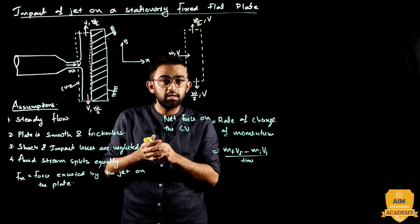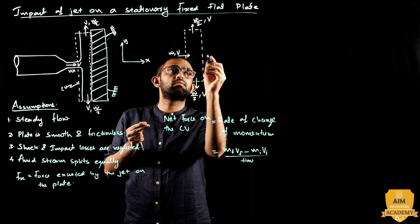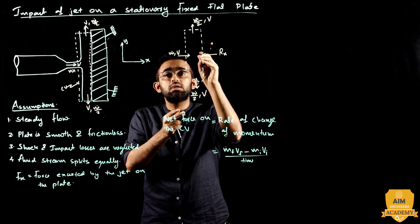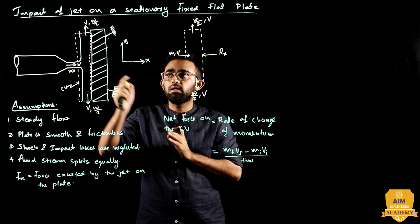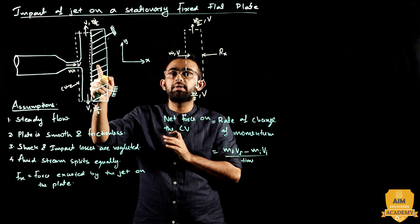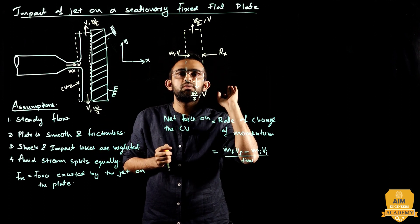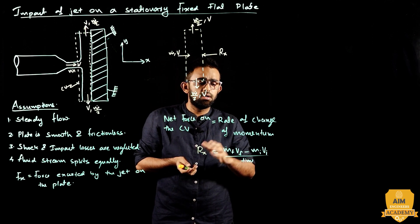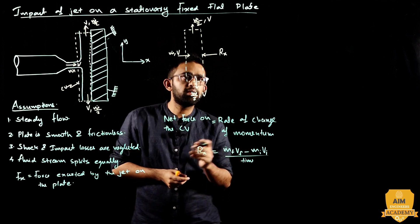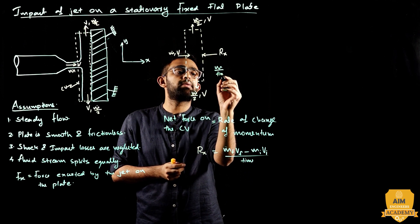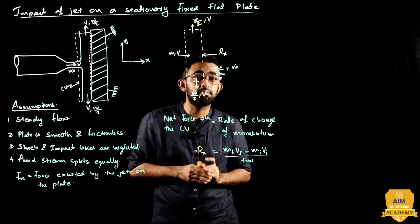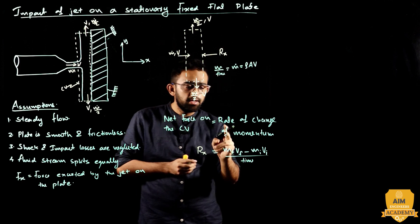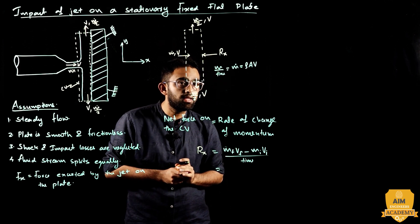There is a control volume, and we place the reactive force Rx in the x-direction. For the control volume, we use the inlet and outlet. Newton's second law gives: net force equals rate of change of momentum. Mass by time is the mass flow rate M-dot, which equals density ρ times area A times velocity.